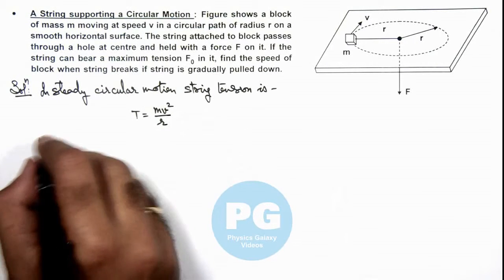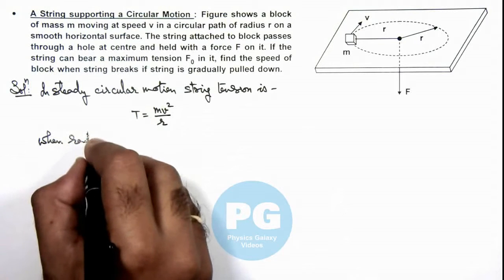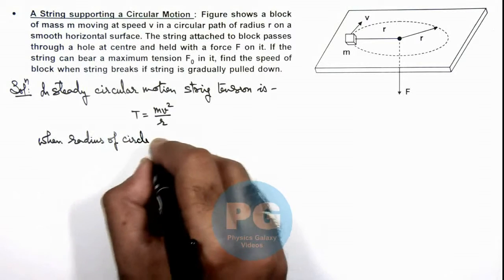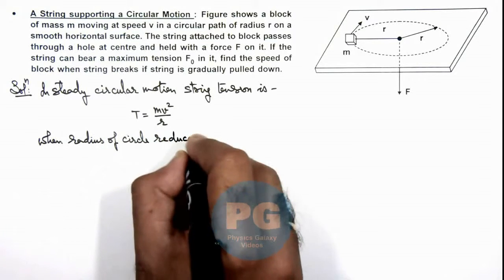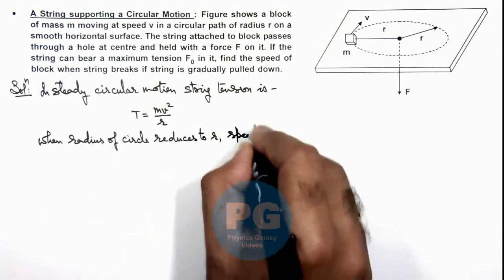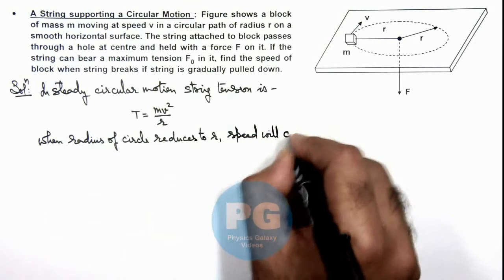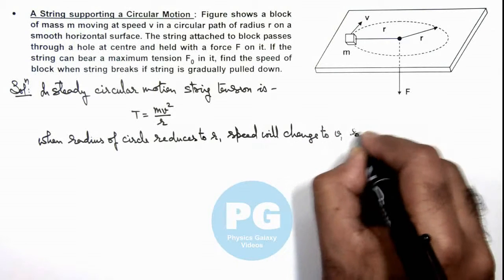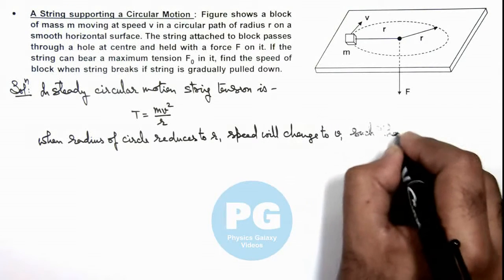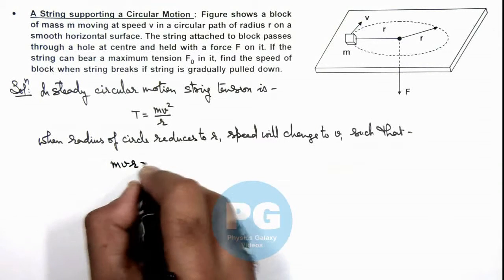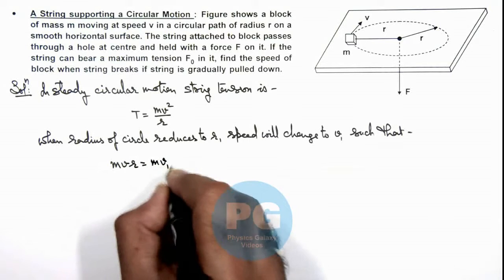When radius of circle reduces to r1, speed will change to v1 such that here we can write m v r should be equal to m v1 r1.